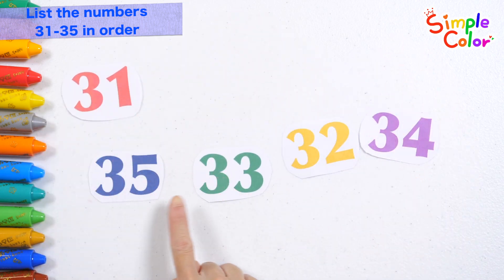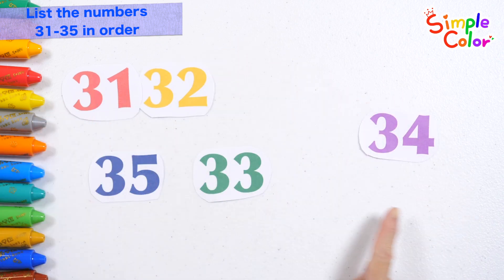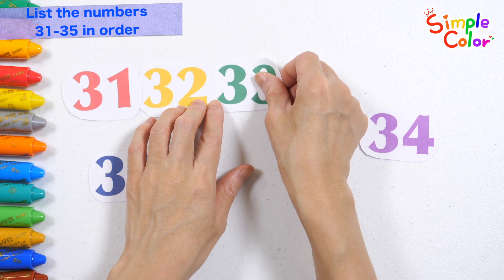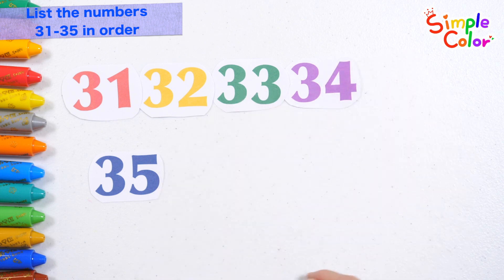What is the second smallest number? That's right! 32. Third, 33. Fourth, 34. Fifth, 35.